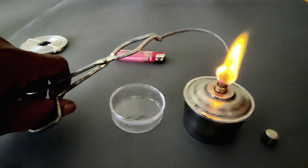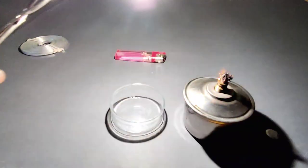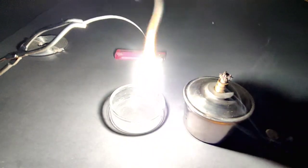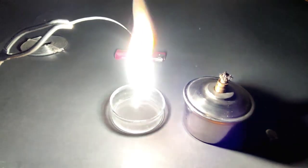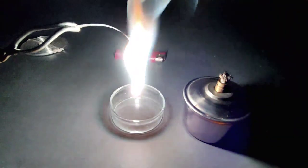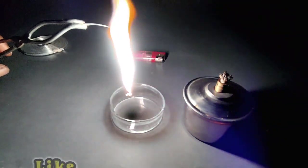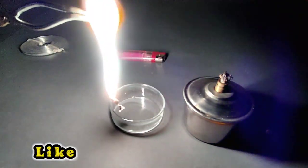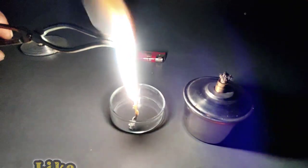We will notice that magnesium ribbon burns in oxygen by producing a dazzling white flame and changes into white powder. This white powder is magnesium oxide.